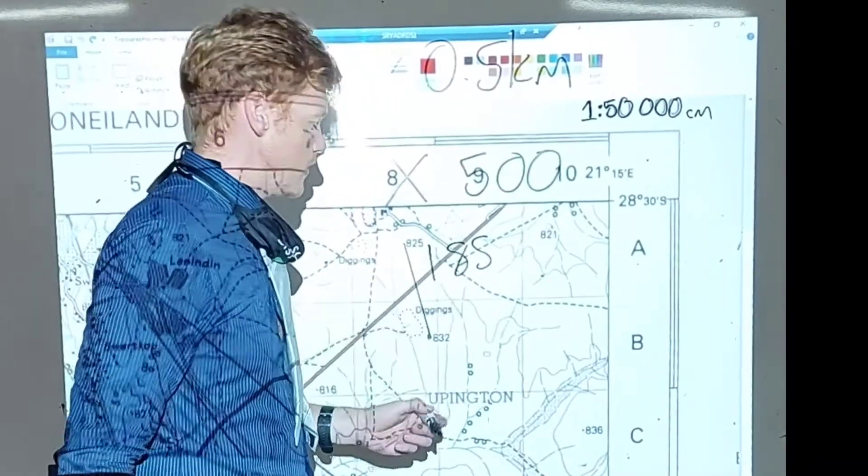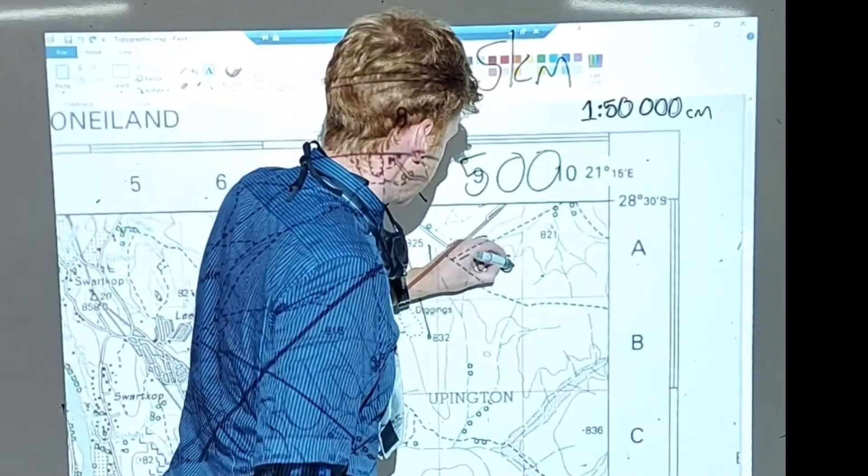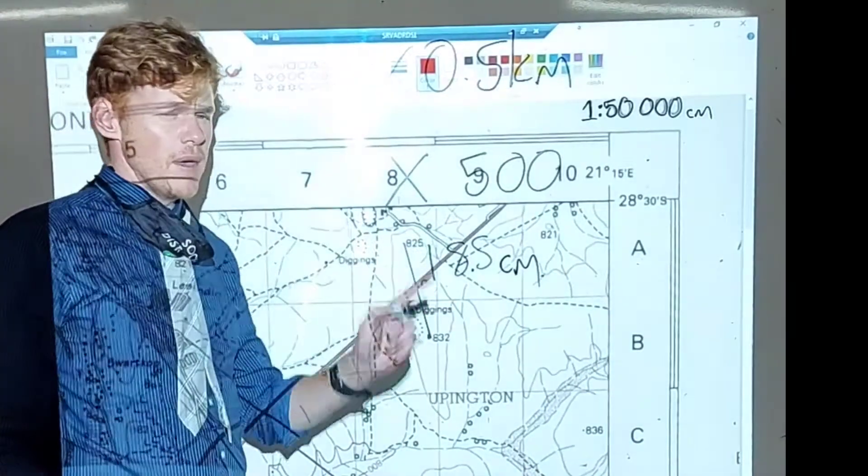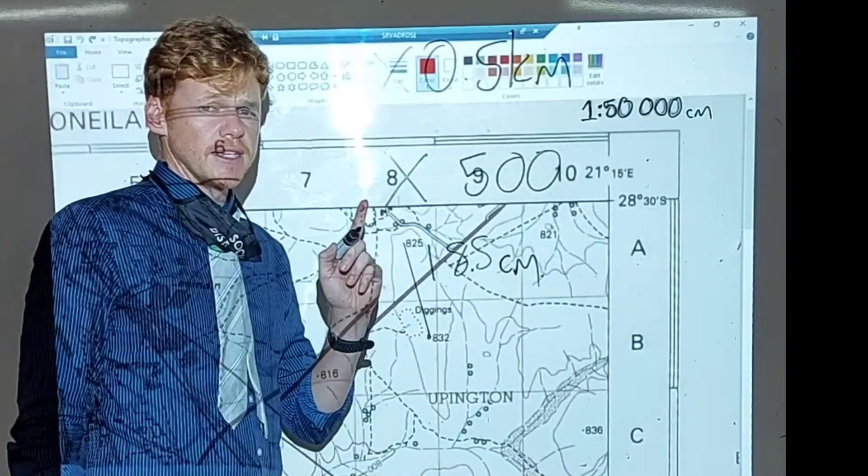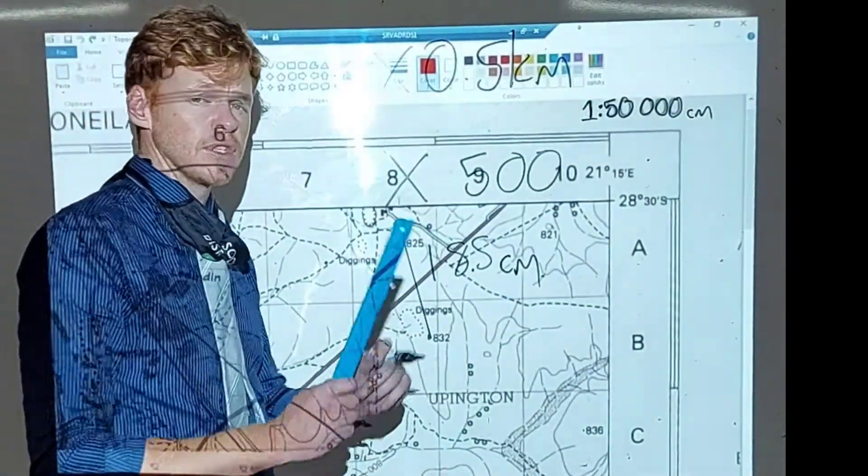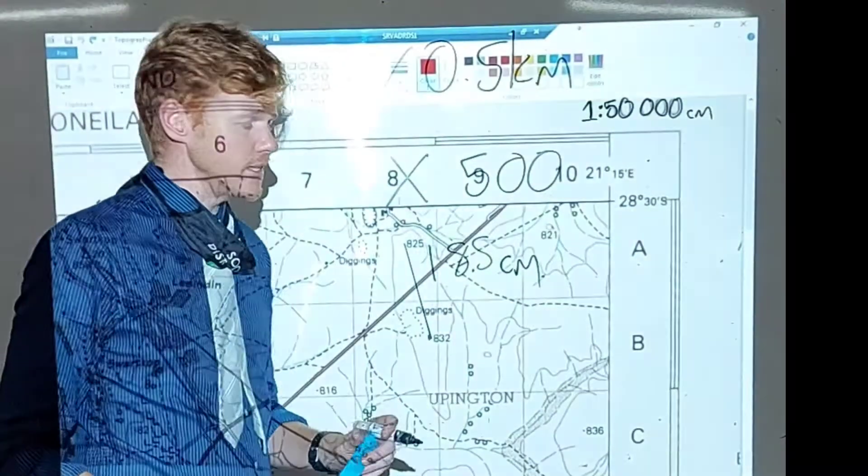Well, we can't say millimeters, so it's going to be 18.5 centimeters, 18.5 centimeters. So remember, when you're working with distances on the map, you don't revert back to millimeters, like we've done with the coordinates, but you actually use the centimeter.